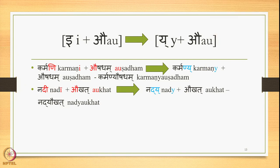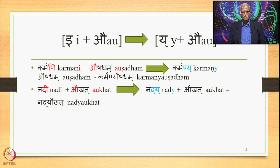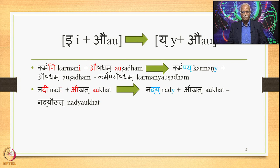Finally for the Ikarashthana type, E followed by Au: 6.1.77 applies giving Y followed by Au. 'Karmani + Aushadham' triggers Eko Yanachi and generates 'Karmaniya Aushadham'. Similarly, 'Nadi + Aukhat' (Aukhat is the past tense of Ukha): 6.1.77 gives 'Nadiya Aukhat'.